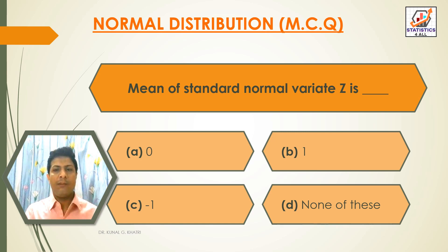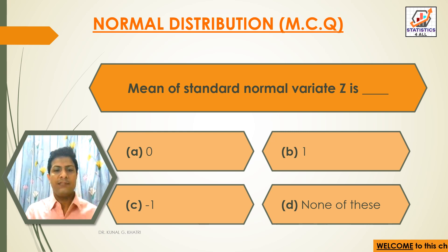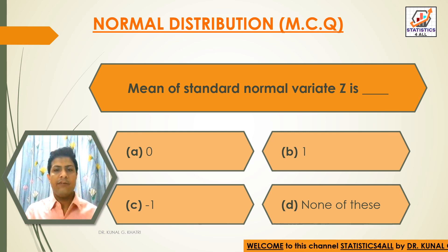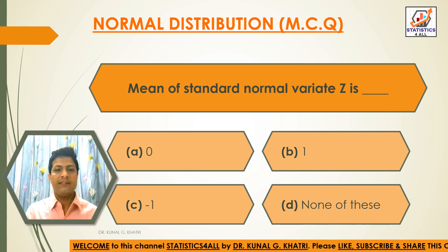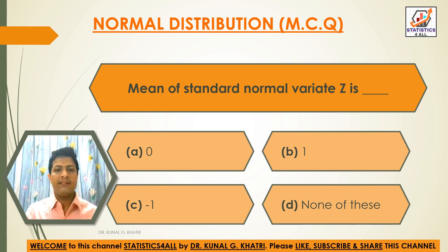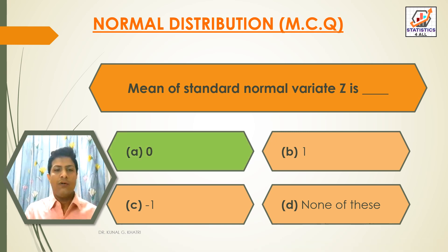Next question: Mean of standard normal variable Z is — Option A: 0. Option B: 1. Option C: minus 1. Option D: none of these. The answer is Option A — 0. The mean of standard normal variable Z is 0.